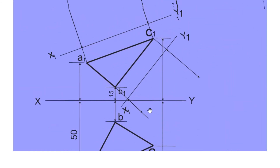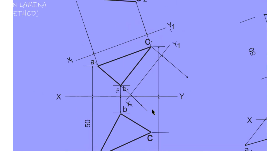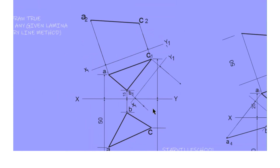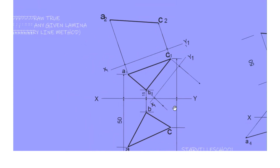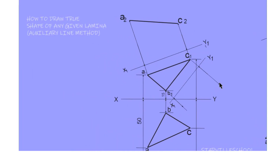Having done that, we do exactly what we did for the first one. This time around we are to draw our lines passing through the tip of the line, drawing lines through those points.